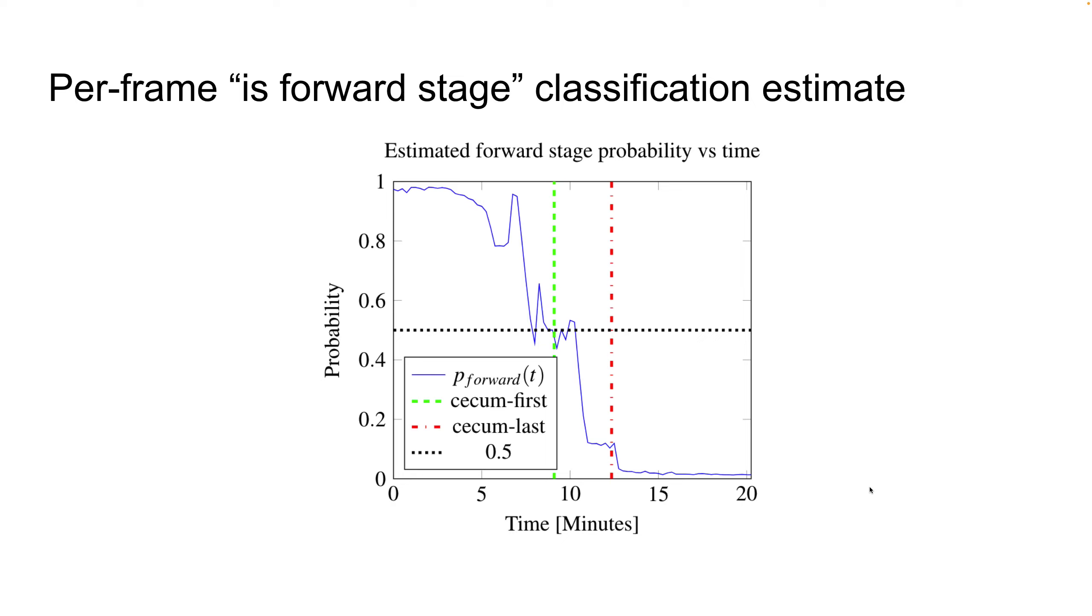From the complete list of probabilities, we generate a maximum likelihood and get the withdrawal start time. To be more explicit, let's look at a specific example. Here we have a per-frame classifier: is this a forward stage?